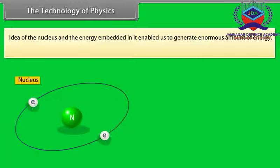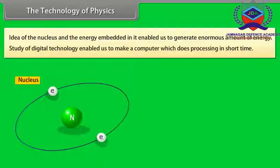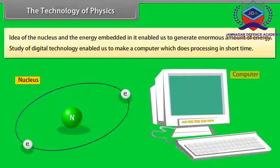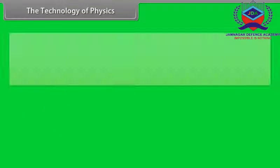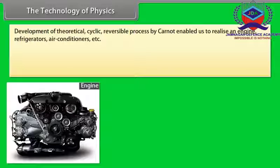The technology of physics. Idea of the nucleus and the energy embedded in it enabled us to generate enormous amounts of energy. Study of digital technology enabled us to make a computer which does processing in short time. Development of theoretical cyclic reversible process by Carnot enabled us to realize an engine, refrigerators, air conditioners, etc.